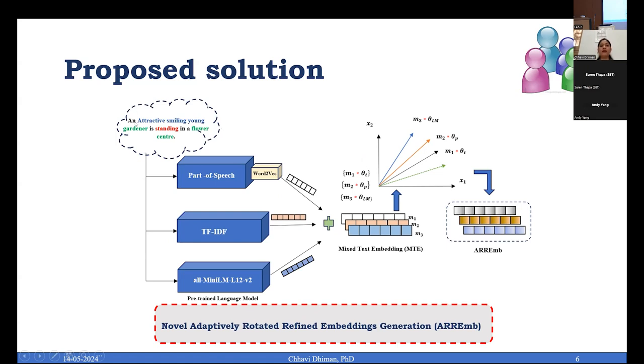Let's have a look at how the rotated refined embeddings are generated. You have a caption given as 'an attractive smiling young gardener is standing in a flower center.' We have colored different parts of speech with different colors to represent different parts of speeches that ensures that part of speech is going to take care of individual sections and develop the embeddings as word to vec. Then you are going to find out their TF-IDF embeddings, and here are the pre-trained language model embeddings that you get. When you concatenate them, you get mixed embeddings as M1, M2, M3.